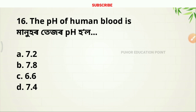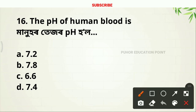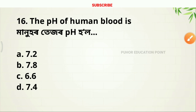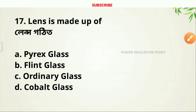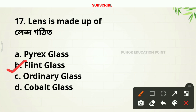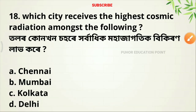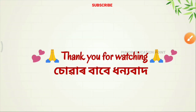The pH of human blood is — [answer not clearly stated]. Next question: Which city received the highest cosmic radiation amongst the following? Option D. Thank you for watching — please subscribe.